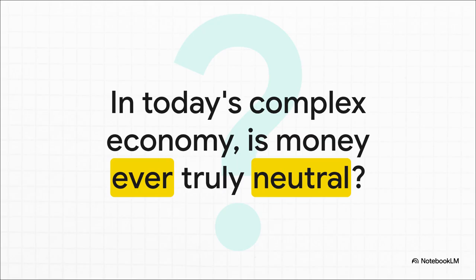Which brings us to a final big-picture question to chew on. The classical dichotomy is a really neat and elegant theory. But in the world we actually live in — a world of constant central bank action and crazy global financial markets — can we really say that money is ever truly neutral, even in the long run? That's a question economists are still fiercely debating right now, and it's something to think about.